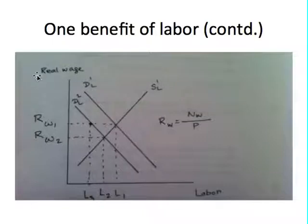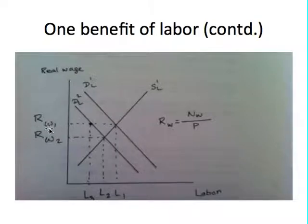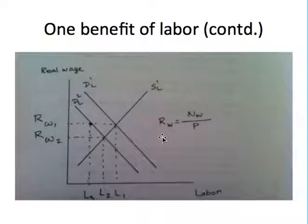In this graph, the vertical axis has real wage and the horizontal axis has labor. D1L is the demand for labor, S1L is the supply of labor, and the intersection point between them gives us the equilibrium real wage Rw1 and the initial equilibrium quantity of labor L1. Real wage, as we learned in the last class, is defined as nominal wage divided by price level.